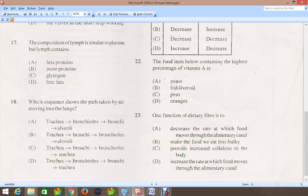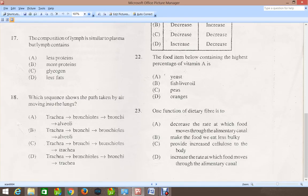Question 22: The food item below containing the highest percentage of vitamin A, and the correct answer for that is fish liver oil. The last question, 23, one function of dietary fiber is, the correct answer for that is D, increase the rate at which food moves through the alimentary canal.